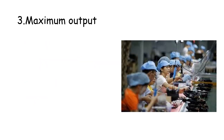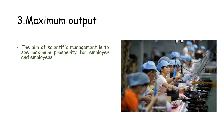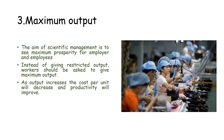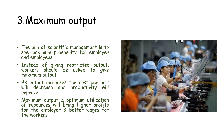The third important principle is maximum output. The aim of scientific management is to see maximum prosperity for employer and employees. Instead of giving restricted output, workers should be asked to give maximum output. As output increases, the cost per unit will decrease and productivity will improve. Maximum output and optimum utilization of resources will bring higher profits for the employer and better wages for the workers.